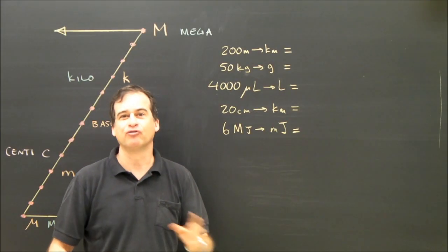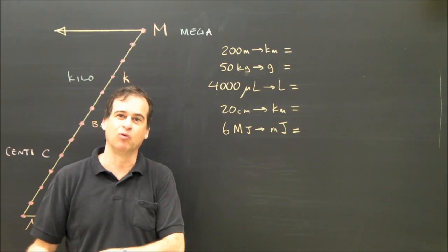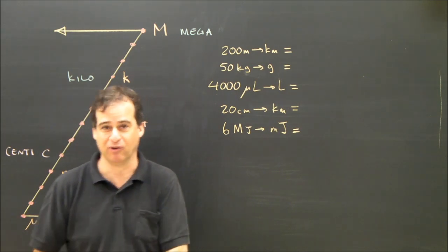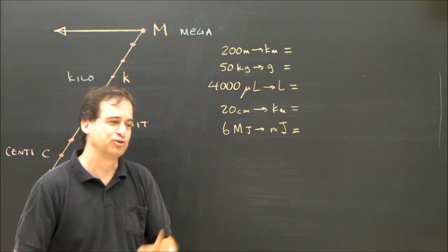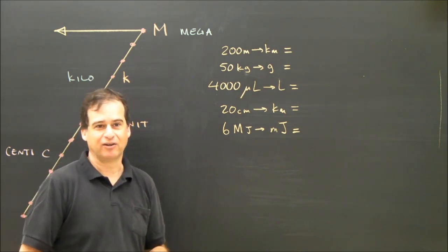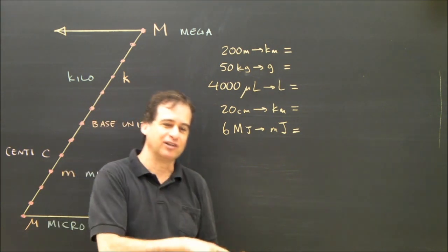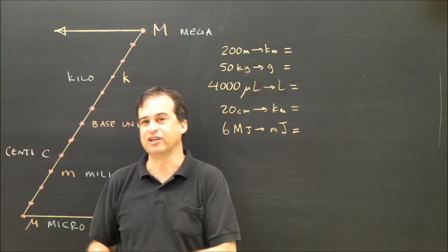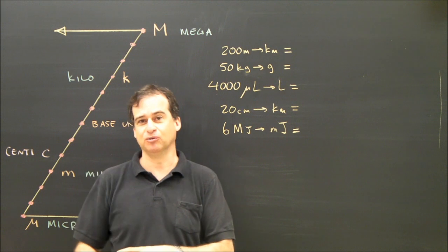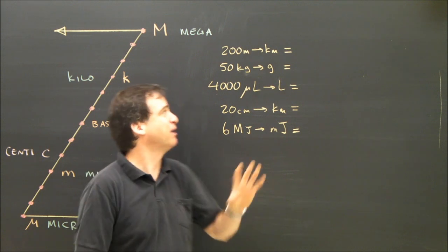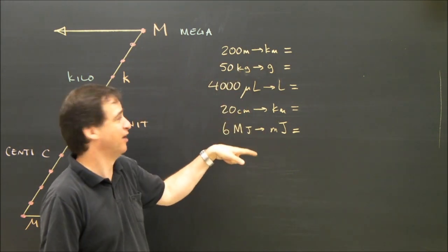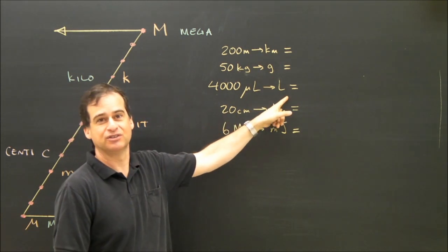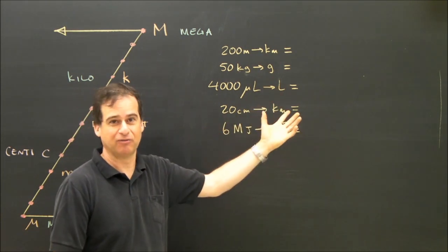Let's take a look at how to convert from one thing in metric to another, like from kilograms to grams. What's great about metric is that when you convert kilograms to grams, it's the same as turning kiloliters to liters or kilojoules to joules. So it doesn't matter what the unit is. This could be microjoules to joules — it's the same conversion.